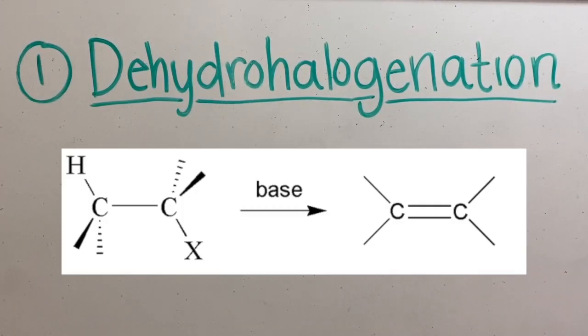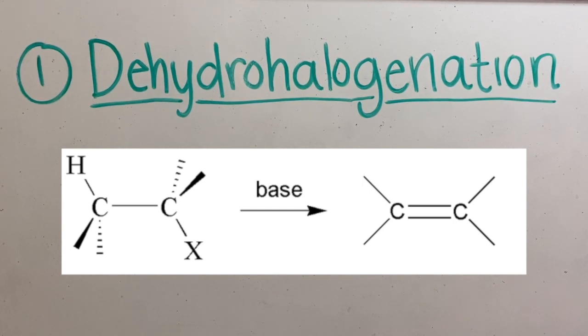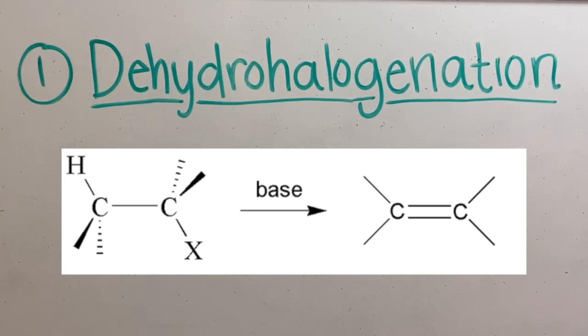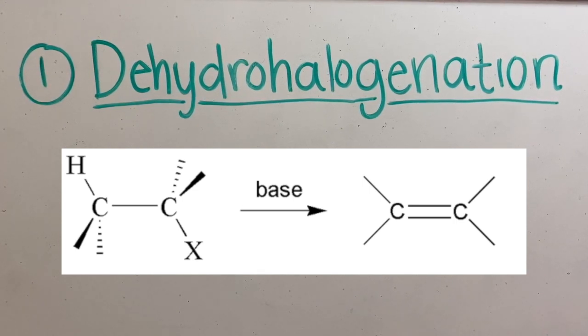The first transformation I will be talking about is dehydrohalogenation, which is an elimination reaction that removes a hydrogen halide and forms an alkene.